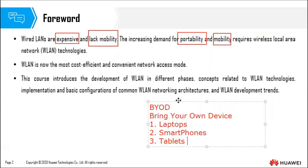Wireless networks are also easier and faster to deploy compared to wired LANs. If we want to connect machines to wires, we have to do trunking — ensuring wires are neatly enclosed in the walls. This is labor intensive and requires involving estates to avoid interfering with other wires or risking electrocution. Wireless local area networks are now the most cost-efficient and convenient network access mode.